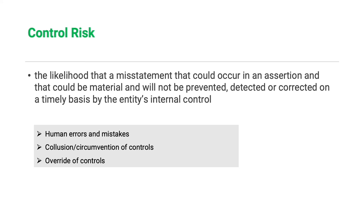Finally, management override is another cause of control risk. Errors or misstatements could still occur because controls did not apply to a particular personnel due to override. For example, if the person committing the misstatement is a member of management, such a control may not be effective — that management or senior officer could override the control that was set up to prevent the misstatement from happening.